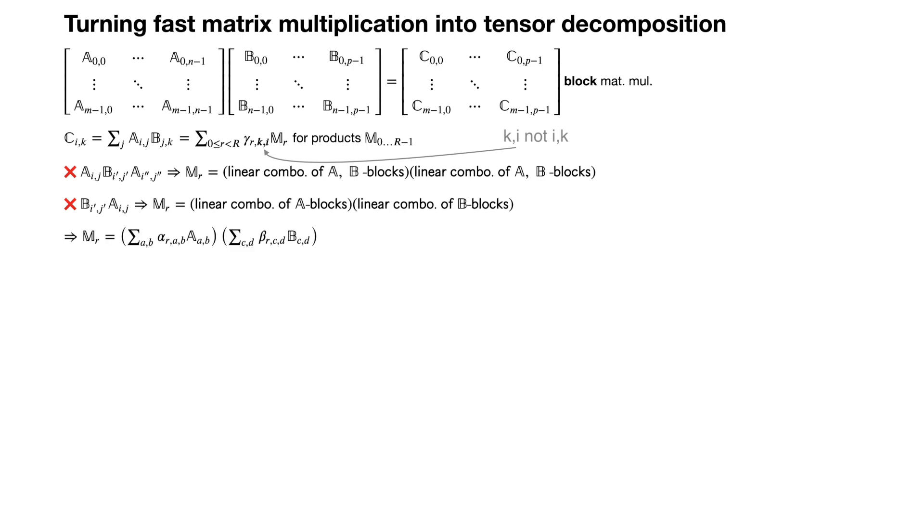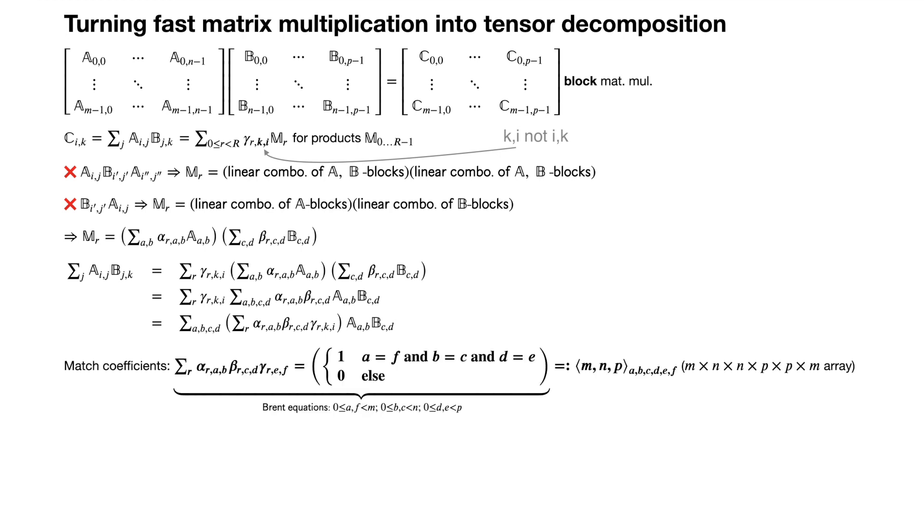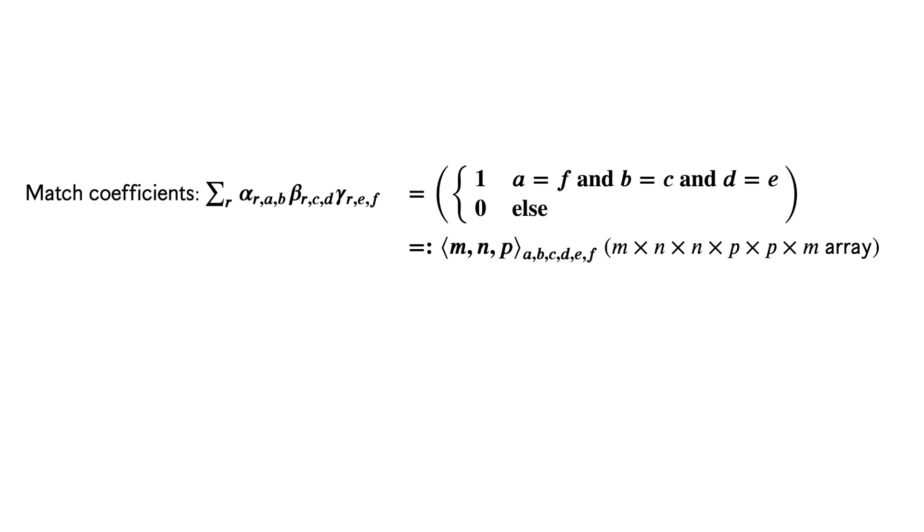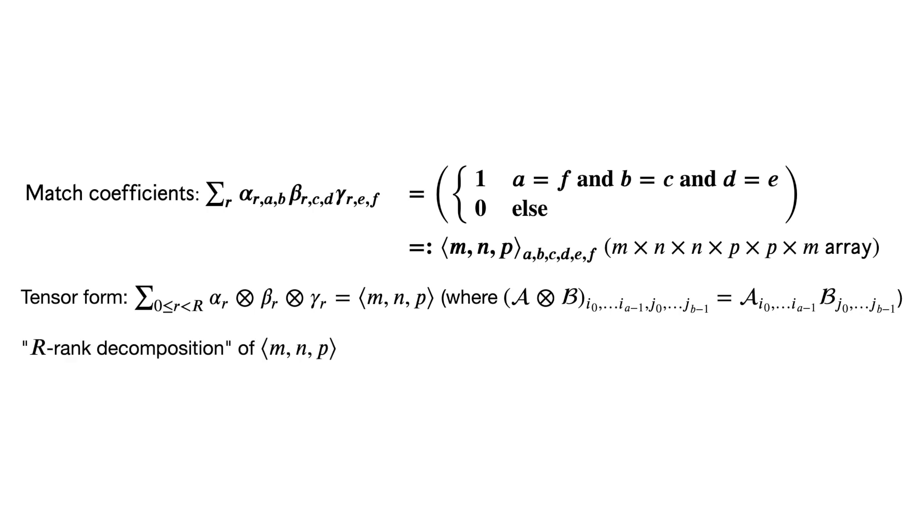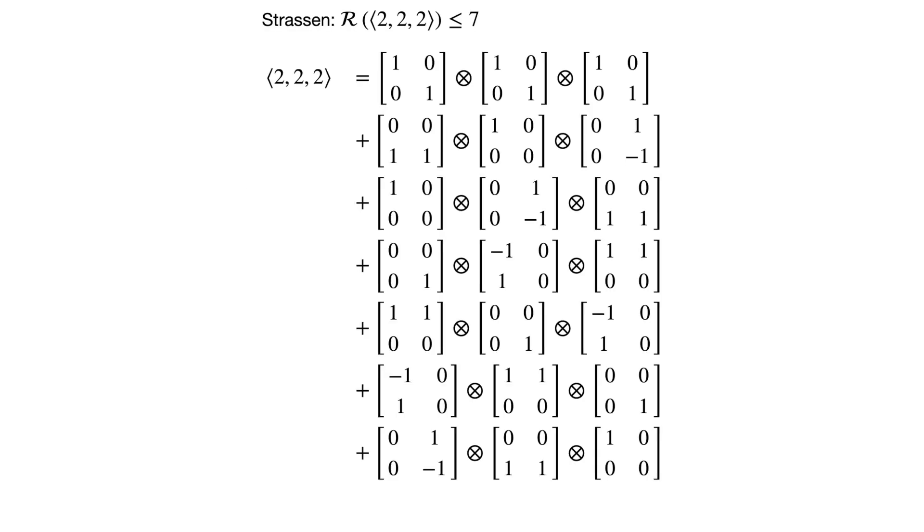If we represent these linear combinations using coefficients, and then plug these products into our desired expressions for our target blocks, we end up with this system of equations. These are known as the Brent equations. Solving this system of equations is equivalent to coming up with a valid divide and conquer scheme for matrix multiplication. We can collect the right hand sides of these equations into a tensor or a multi-dimensional array. We call this the MNP matrix multiplication tensor. Using the multi-dimensional outer product, we can rewrite this system of equations into what is known as a tensor rank decomposition. If we have r different summands, we call this an r-rank decomposition. Finally, the rank of a tensor is the lowest such r such that there exists an r-rank decomposition of that tensor. So if we have an r-rank decomposition of an MNP tensor, that means that its rank is at most r. Strassen's algorithm corresponds to this rank 7 decomposition of the 222 tensor.